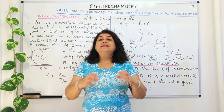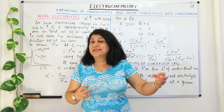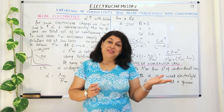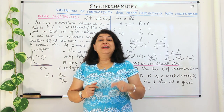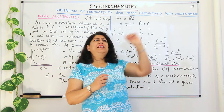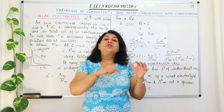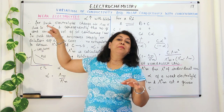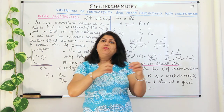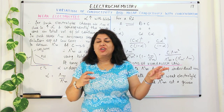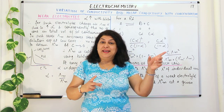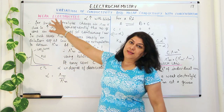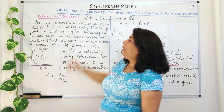As the degree of dissociation increases, the number of ions present increases and that will affect the conductance. At extreme dilution, when the concentration is almost approaching zero, where we say the molar conductivity is lambda°M, the distance between the ions would be so much that the conductivity would be affected by that. So let us understand what the conductivity is affected by regarding weak electrolytes.